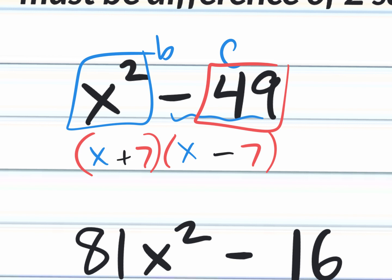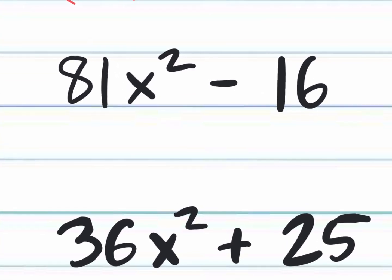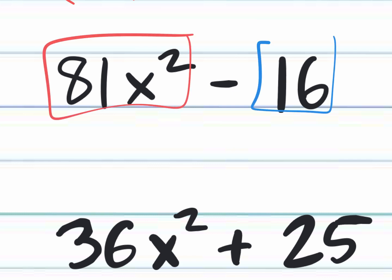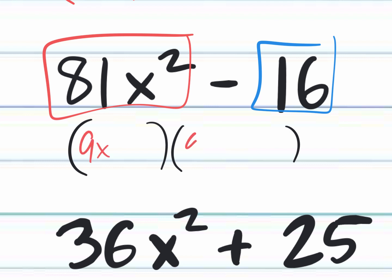Next: 81x squared minus 16. Do we have a perfect square term in the front? Yes. In the back? Yes. Square root of 81x squared is 9x; square root of 16 is 4. Because there's no middle term and the 16 is negative, you need one plus and one minus — it doesn't matter which is which, as long as the signs are different: (9x plus 4)(9x minus 4).